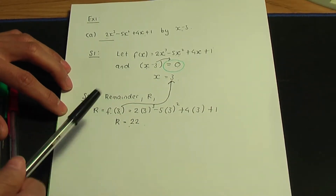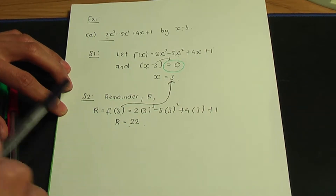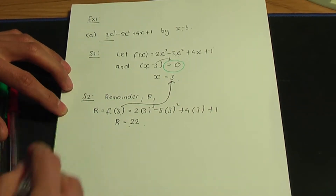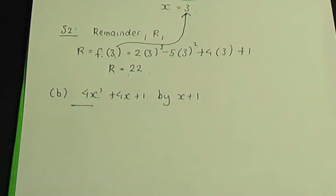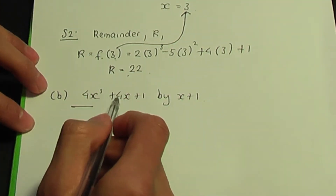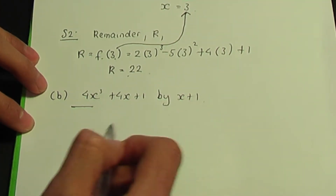So I've applied the steps to part A. Now I have another example. Let's find the remainder using the remainder theorem. In part B, we're going to divide 4x cubed plus 4x plus 1 by x plus 1. So let's see the remainder theorem in action again. Back to the paper and pen.